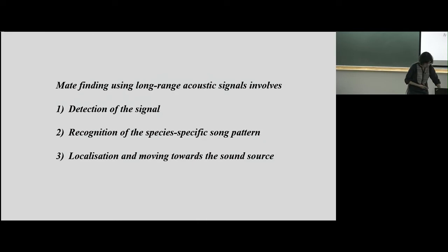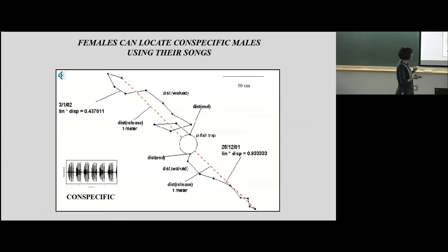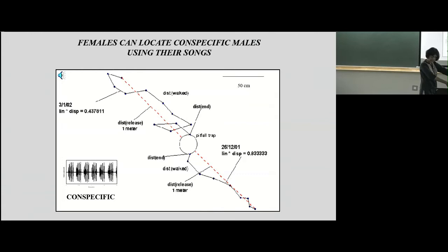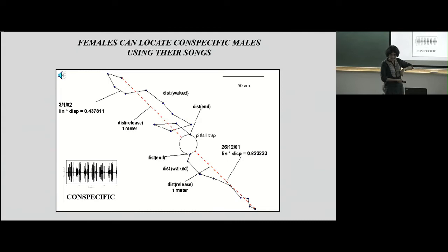You can test this in a behavioral experiment. The three species I showed you share a patch of grass on the campus of the Indian Institute of Science. We take females of one species and play out the song of the male of that species in the field. These crickets live in the ground, so we dig a little hole, put a speaker inside, and release a female about a meter away — these animals are about a centimeter long — and just follow them. You can see the walking track of one female approaching and jumping into the pit.